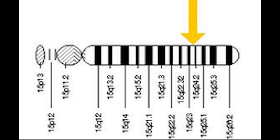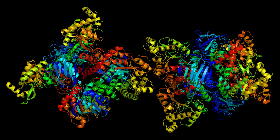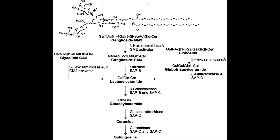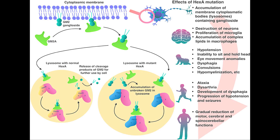Tay-Sachs is an autosomal recessive disease caused by mutations in both alleles of a gene on chromosome 15. HEXA codes for the alpha subunit of the enzyme beta-hexosaminidase A. This enzyme is found in lysosomes, organelles that break down large molecules for recycling by the cell. Normally, beta-hexosaminidase A helps to degrade a lipid called GM2 ganglioside, but in Tay-Sachs individuals, the enzyme is absent or present only in very reduced amounts, allowing excessive accumulation of the GM2 ganglioside in neurons.